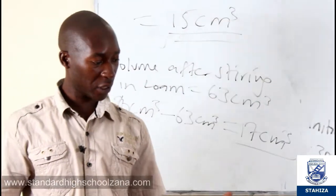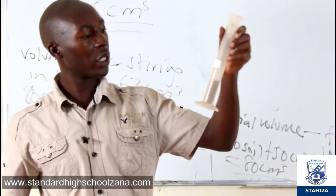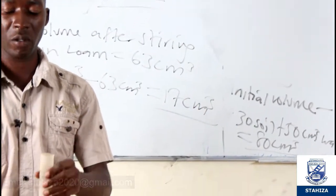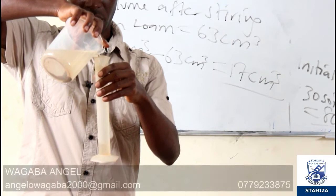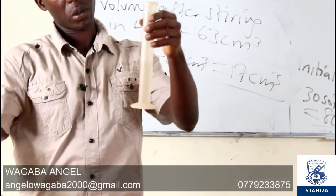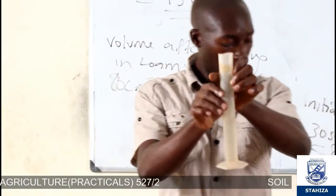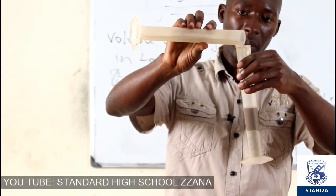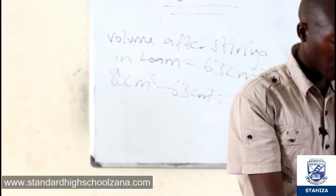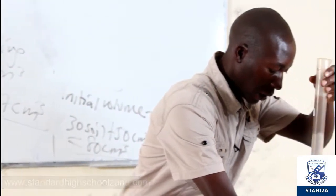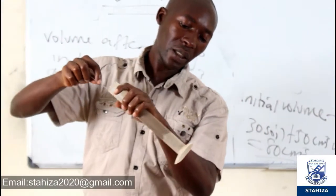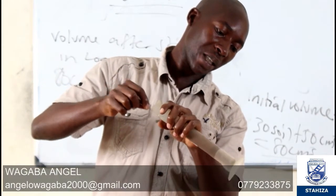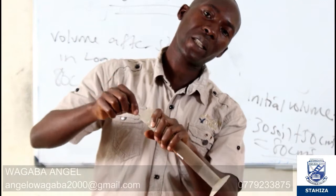Now we are going to clay soil. We are also going to put in 50 cubic centimeters of water. We are putting in 30 cubic centimeters of clay soil. Now after pouring in the water, then you stir so that the water can enter the soil.